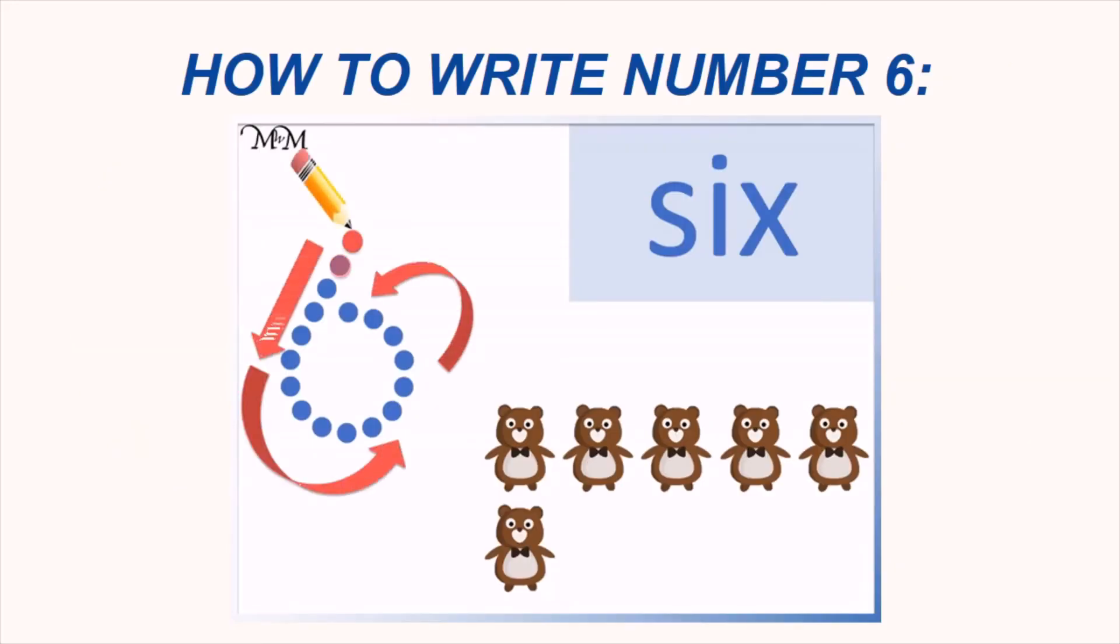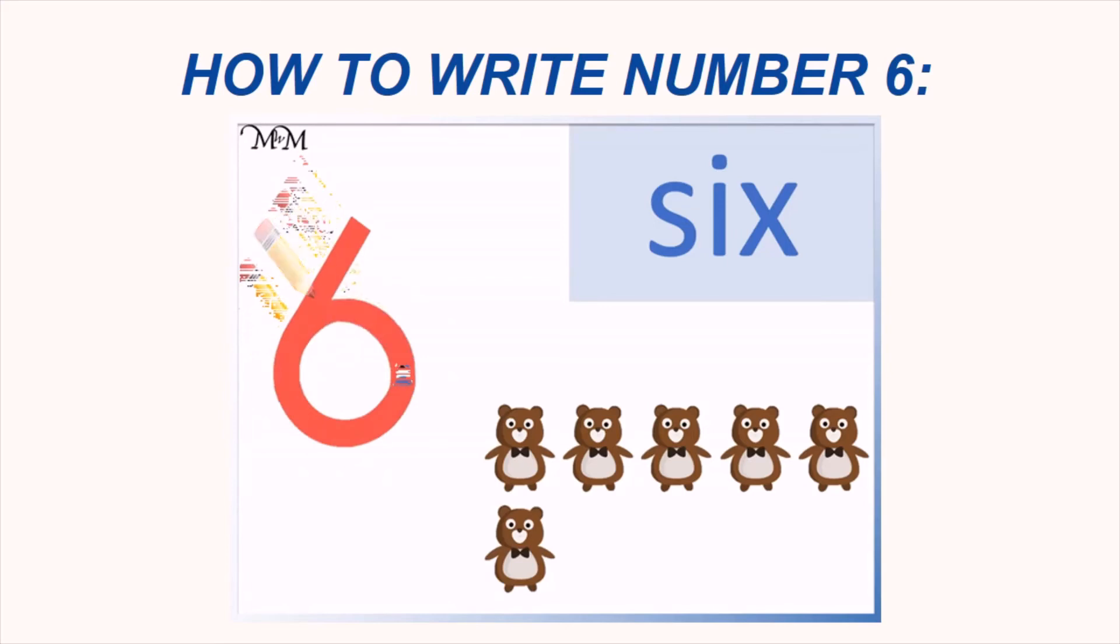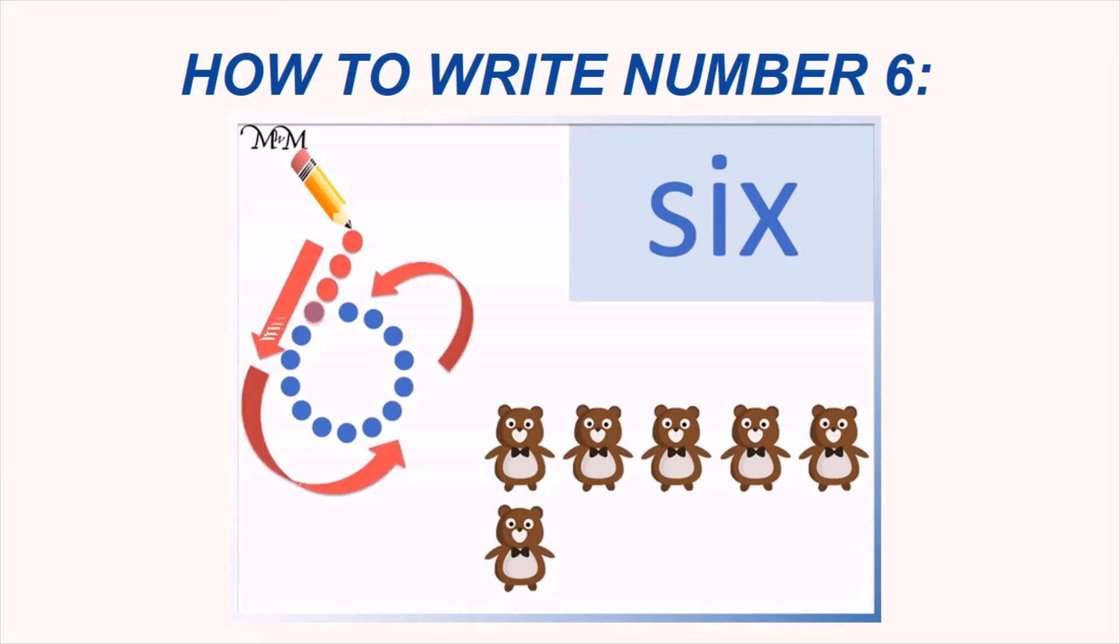A slanting line like this and then we will make a circle like this. See once again, a slanting line like this and then a circle. 6 is ready. Let's repeat once. A slanting line and then a circle like this. Very good. We will start from the top, a slanting line like this.